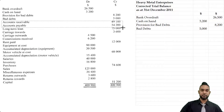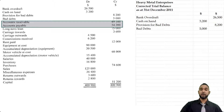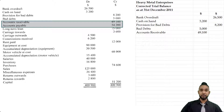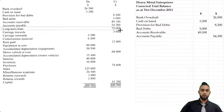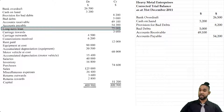We have accounts receivable (debtors) and accounts payable (creditors). Accounts receivable is an asset and assets have debit balances. Conversely, accounts payable — also known as creditors or trade creditors — is a liability and liabilities have credit balances. Next I'm seeing long-term loan. A loan, whether long-term or short-term, is a liability and liabilities have credit balances.